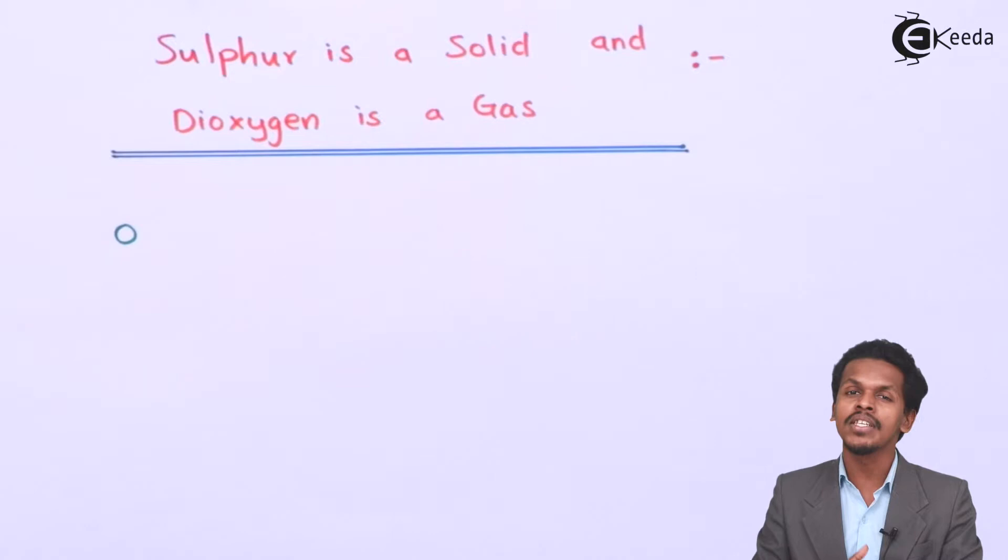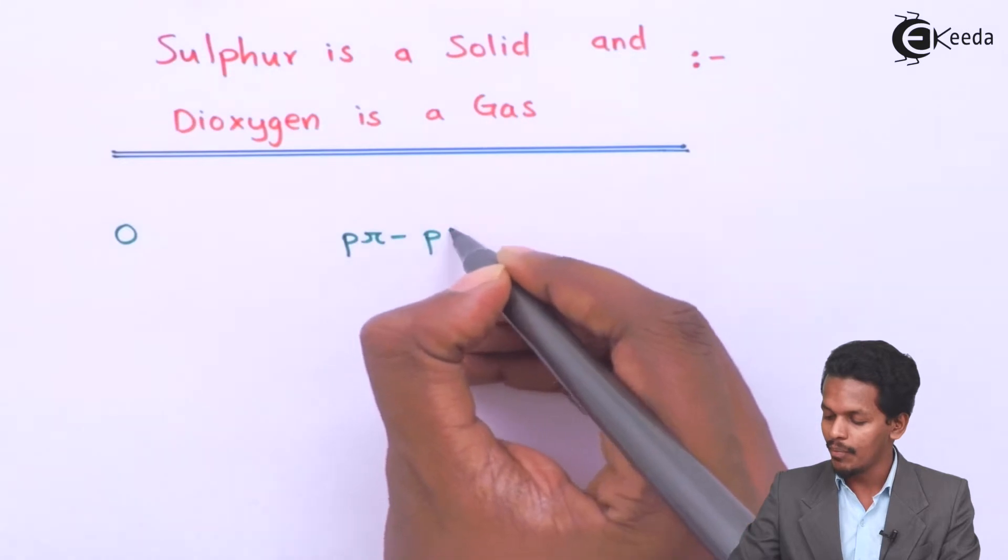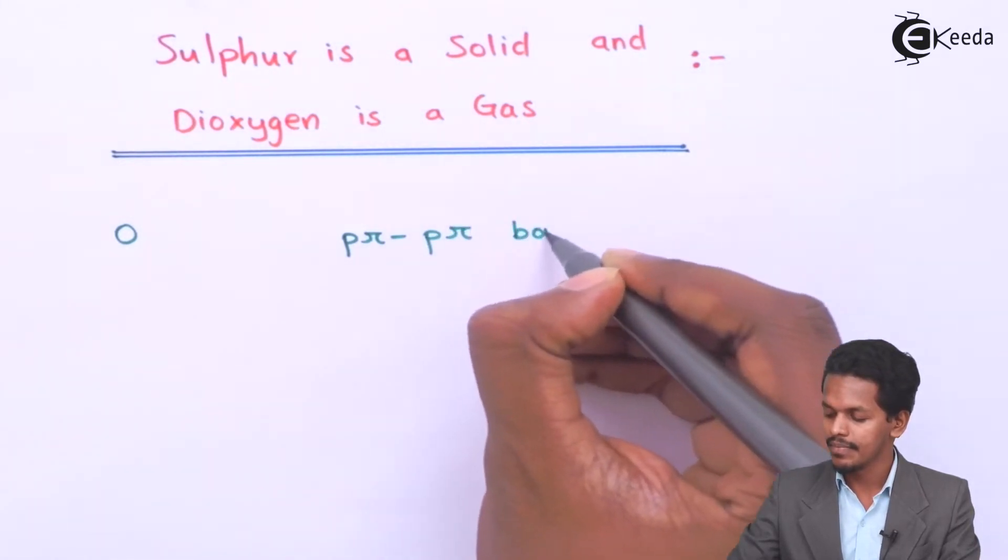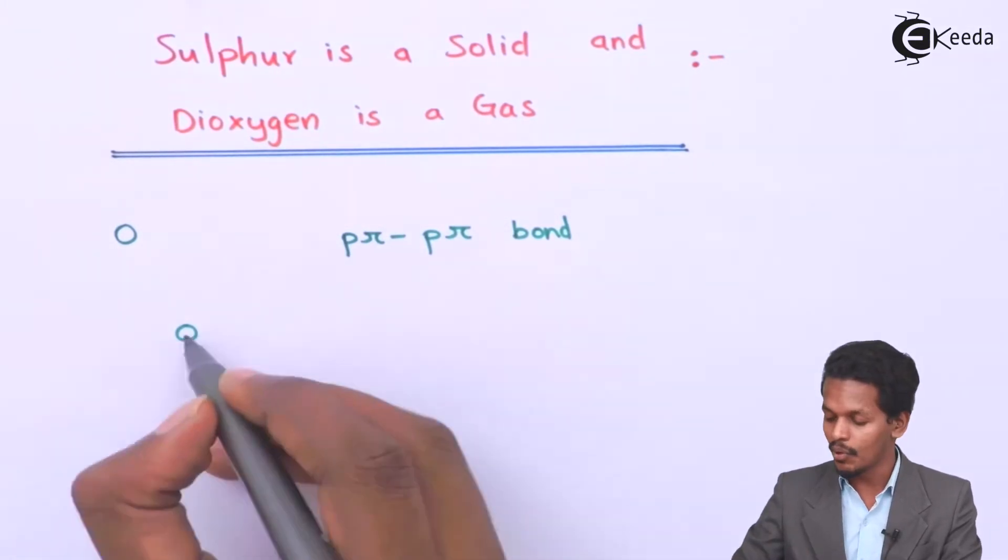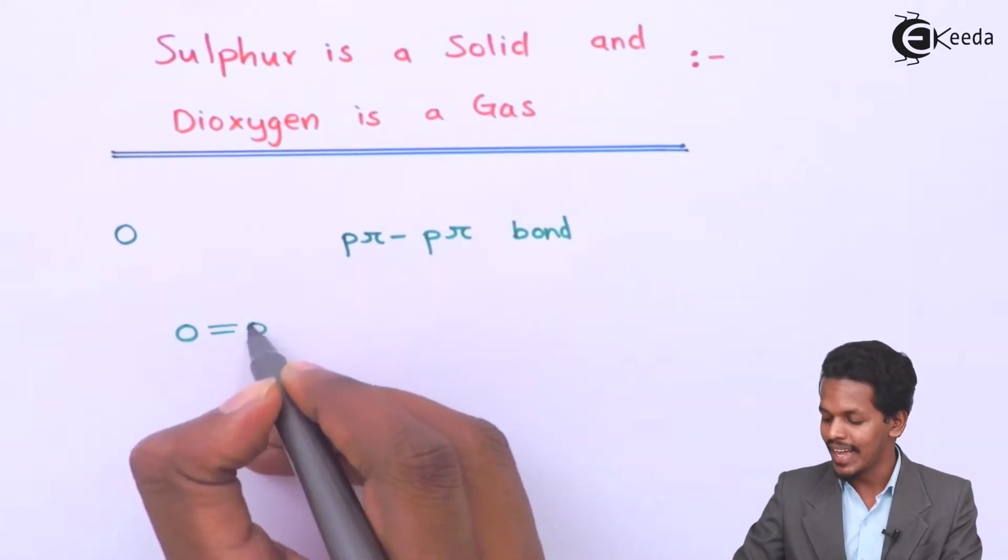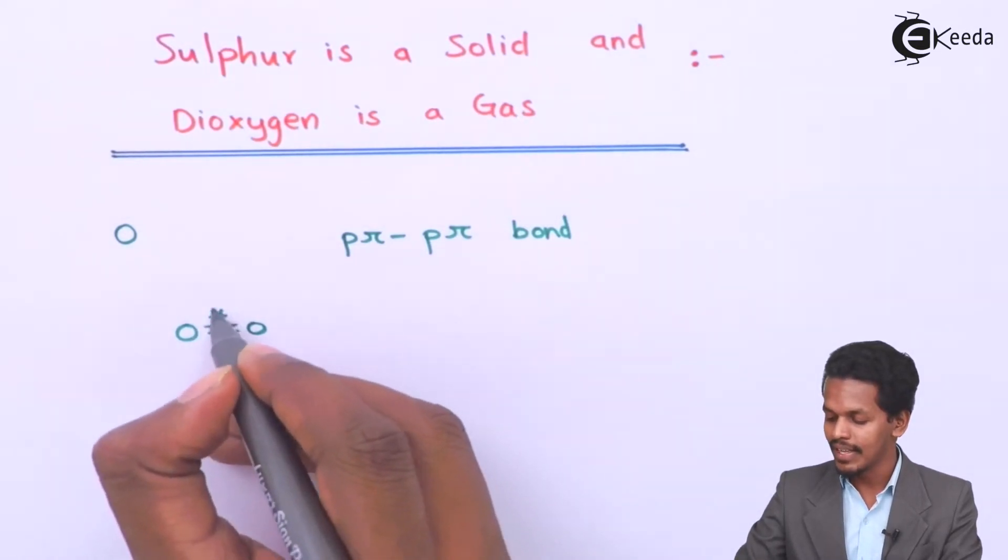Talking about oxygen, oxygen is more electronegative and has a smaller atomic size. Because of this electronegativity, they have a tendency to form P-pi P-pi bonds. That's the reason that oxygen, or dioxygen if I'm talking about, is always a diatomic molecule.